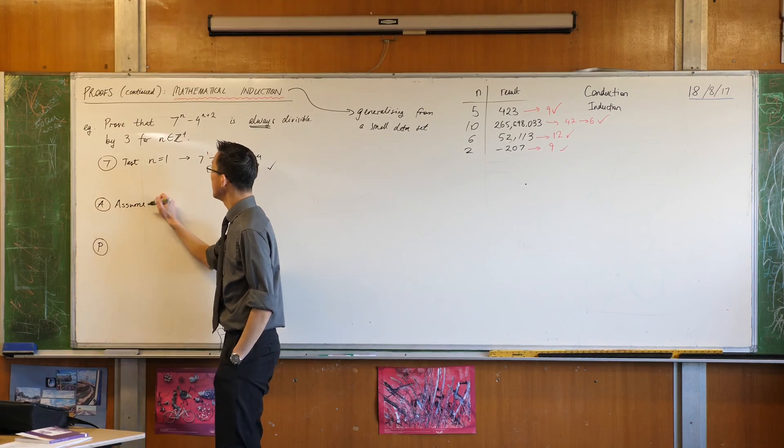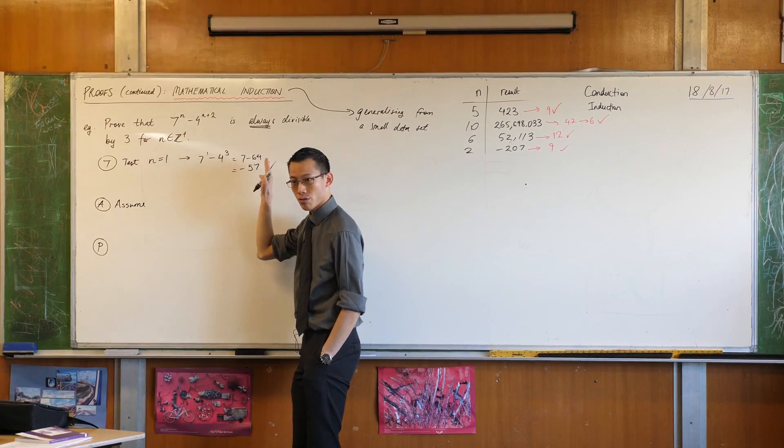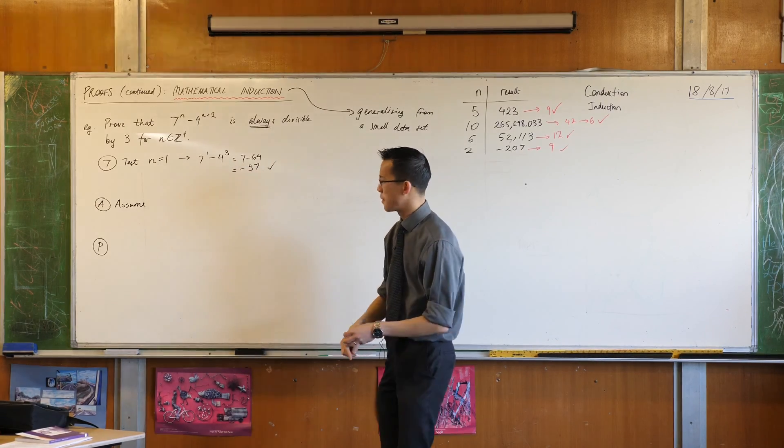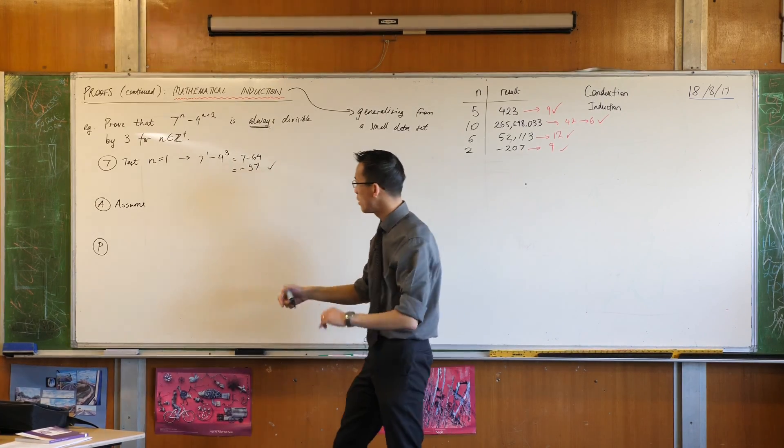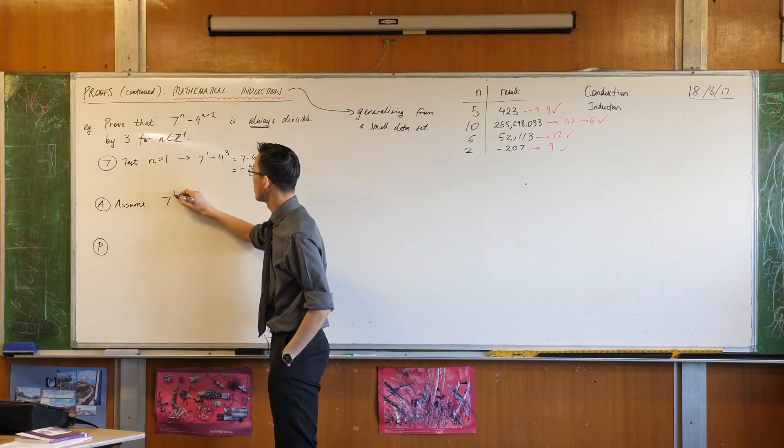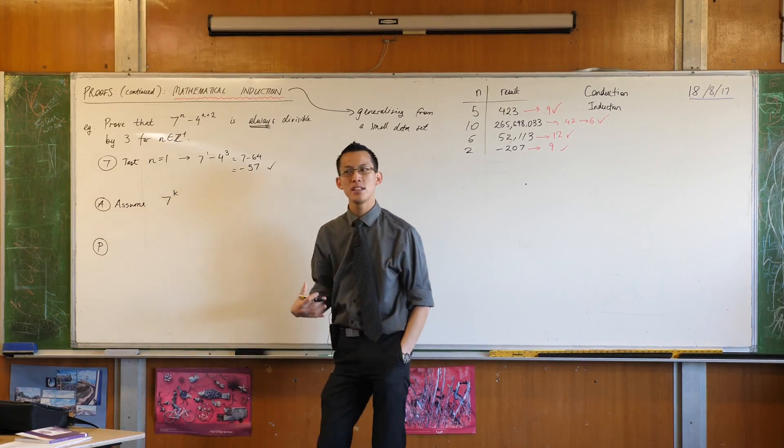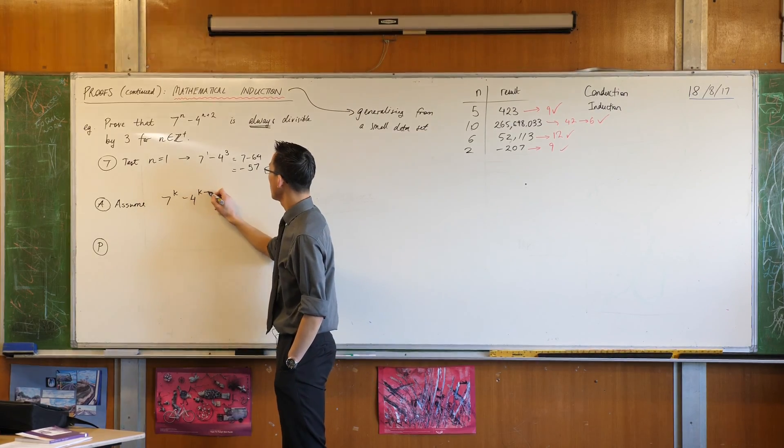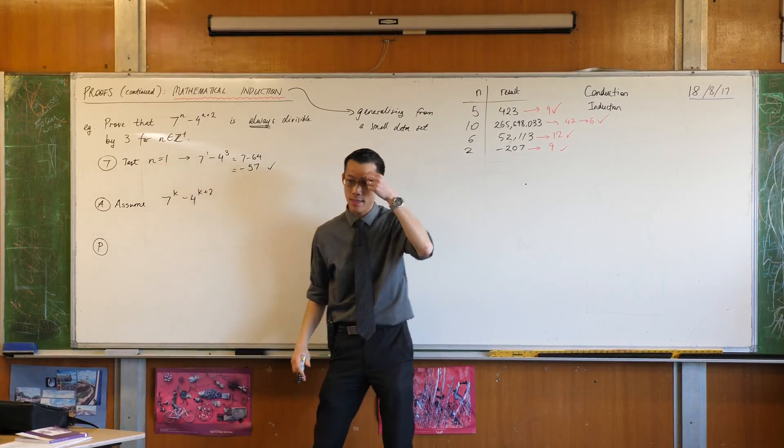I'm going to assume that the statement is true for some random value of n. So because I want to pick any value of n, what I do is I give that a letter. So I'm going to call my particular value of n, k. So I'm going to assume that this number here is divisible by 3.